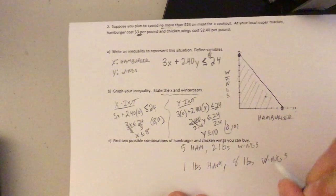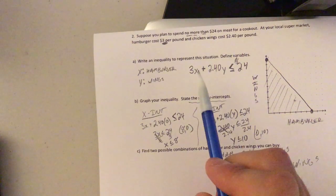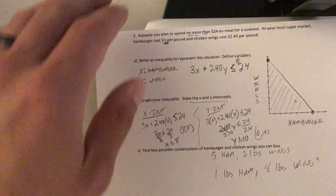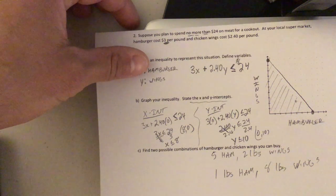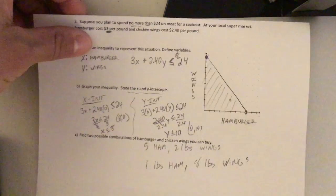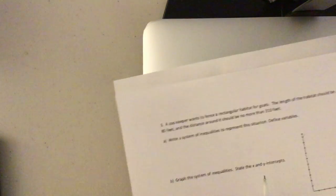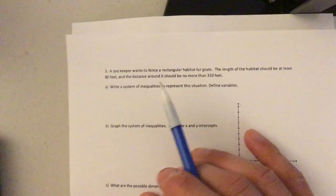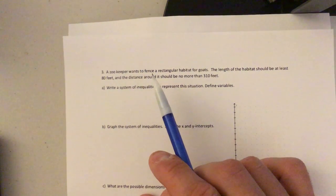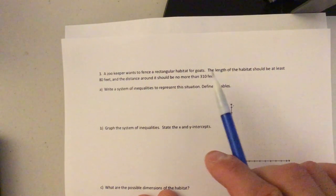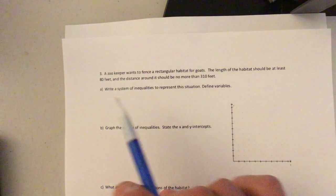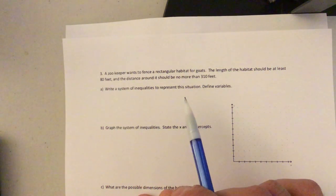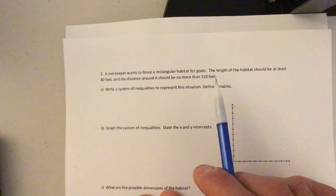Okay. The tricky part in this is two tricky parts, setting it up and finding your X and Y intercepts. We're going to do one more and I'm actually going to speed this one up. But hopefully that's starting to make a little bit of sense. Hopefully. Okay. This one's a true system. A zookeeper wants to fence a rectangular habitat for goats. The length of the habitat should be at least 80 feet and the distance around it should be no more than 310 feet. Okay.